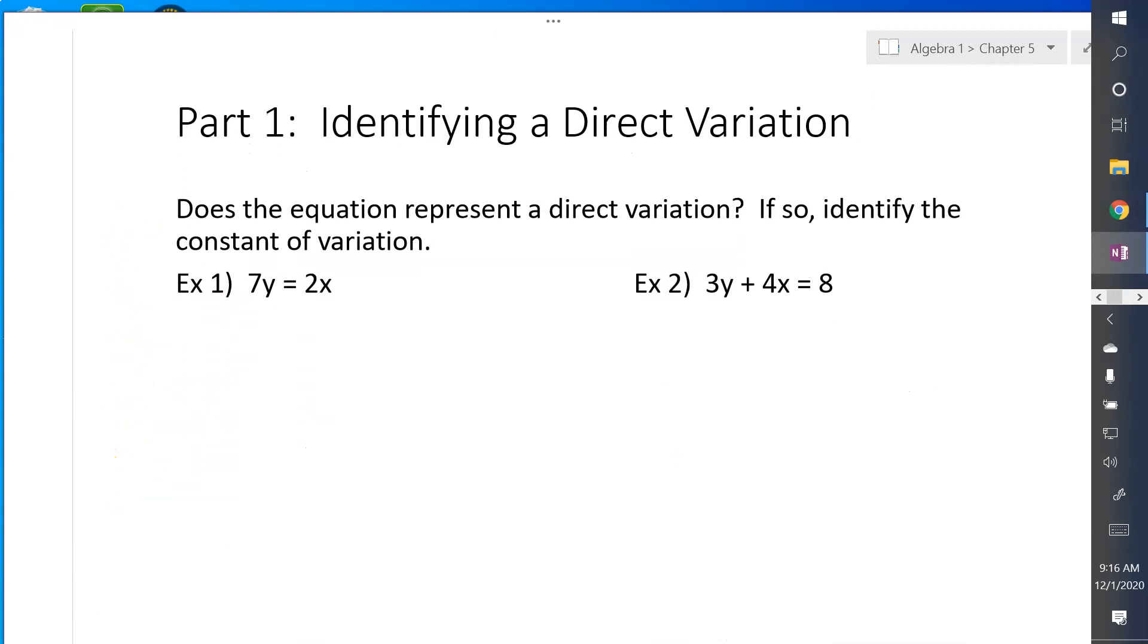So let's go ahead and play around with this a little bit. Does each equation represent a direct variation? If so, identify the constant of variation. So what you have to do is I have to solve for y. So on this first one, I'm going to divide both sides by 7, and I get y equals 2 over 7 times x. So that is a direct variation.